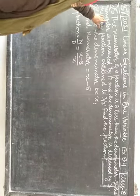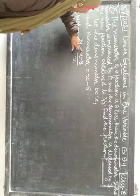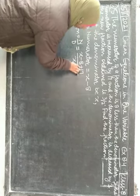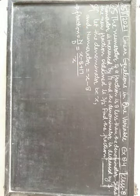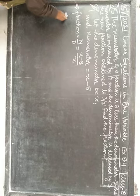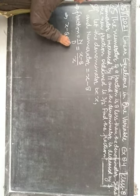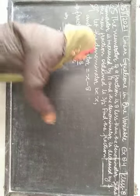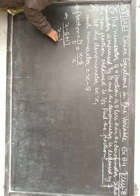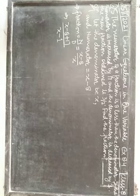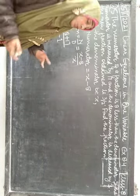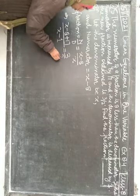Ab inho ne kaha hai: if the numerator is increased by 17 — agar numerator mein 17 increase kar diya jaye. Increase ke liye plus ka sign use hoga, to numerator mein plus 17 kar denge. Aur denominator mein se: denominator is decreased by 1 — decrease means minus. Agar numerator mein 17 kar dun aur denominator mein se 1 subtract kar dun, the new fraction obtained is 3 upon 2. Jo naya fraction banega, that is equal to 3/2.